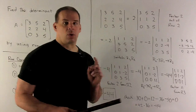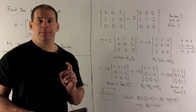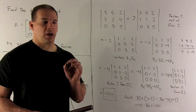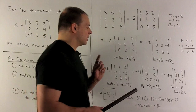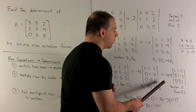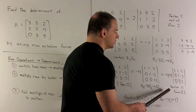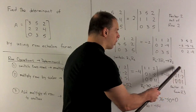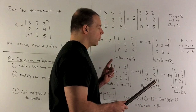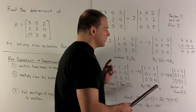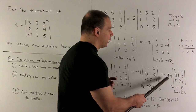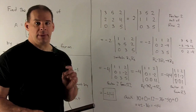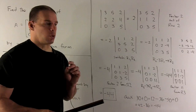For my final row operation, I'll factor 11 out of row 3. That's going to give us a minus 44 out in front. We're now in row echelon form, so the determinant is just whatever's out in front. The determinant is minus 44.